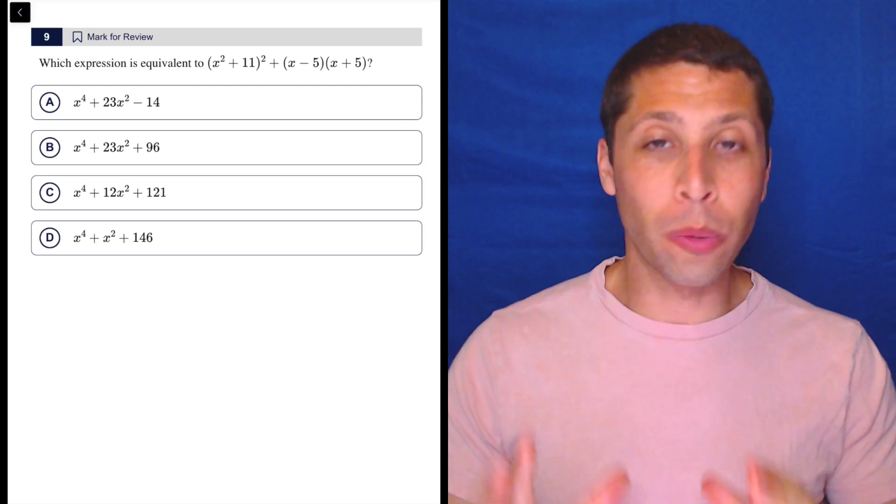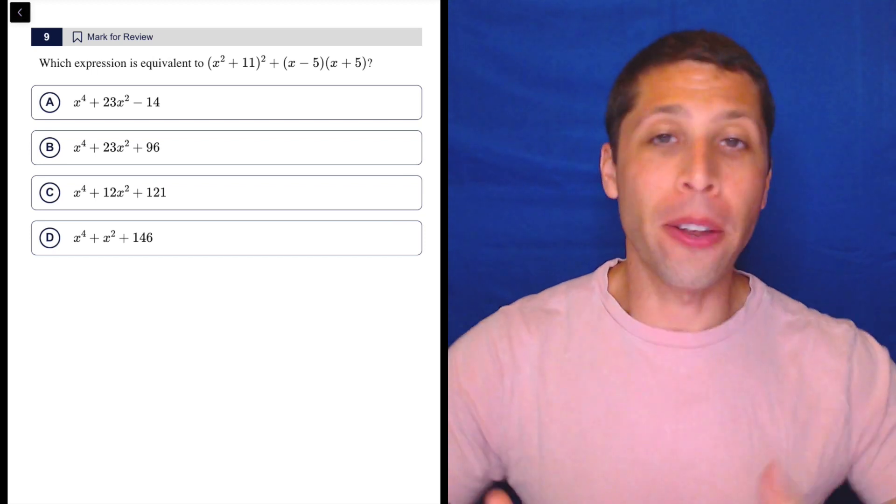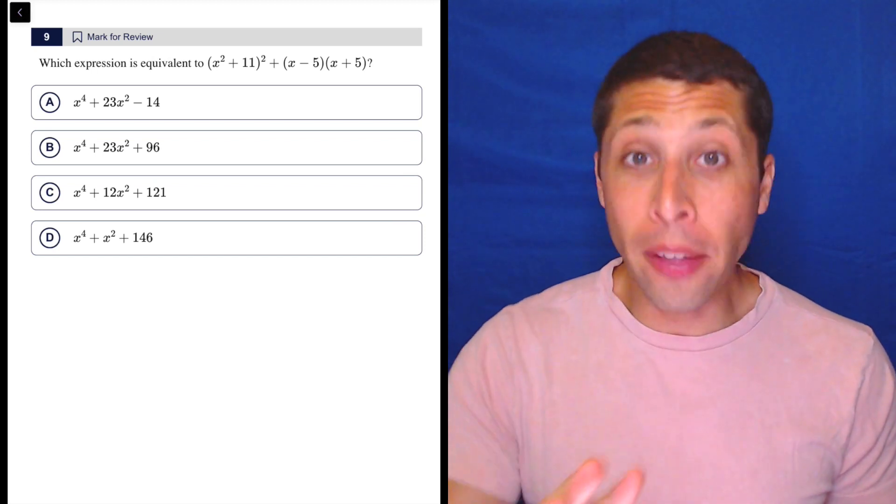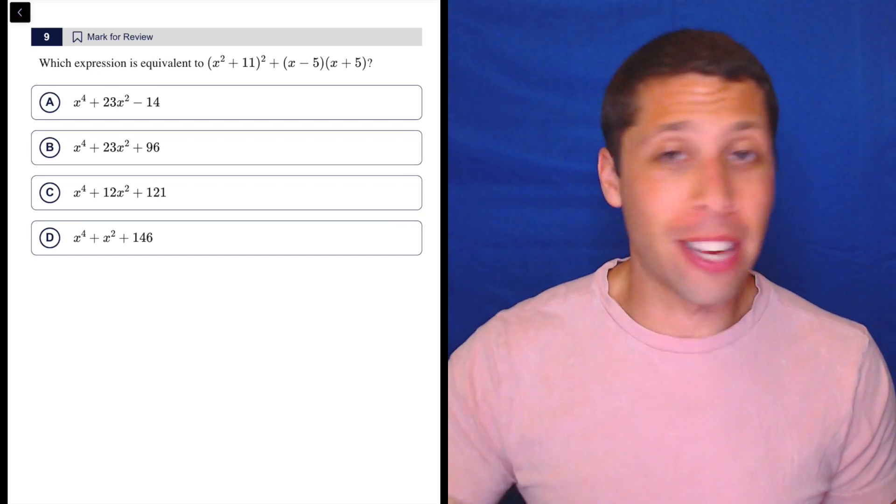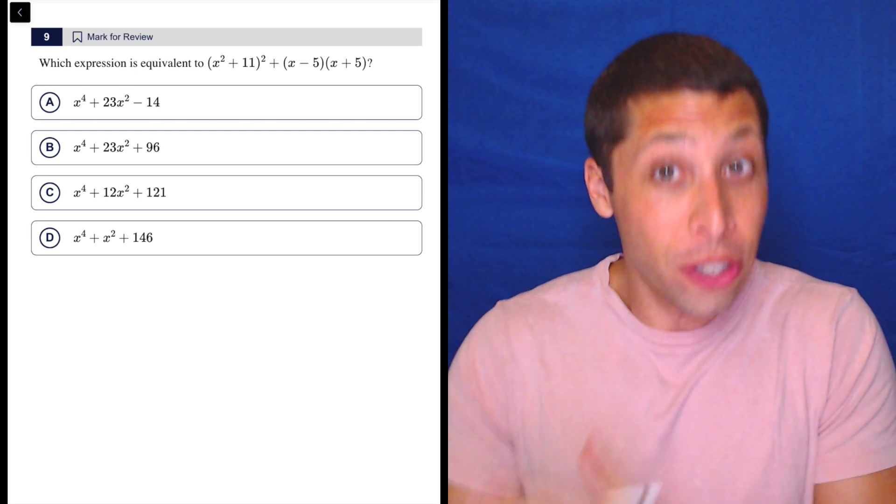This is a great example of a question where if you're thinking strategically about the SAT, your method for this is obvious. Most of you are not thinking strategically. You're just thinking about it as a math test. So you're going to look at this and be like, oh, it's algebra. I've got to foil, I've got to distribute, I've got to do all these things. And you can solve that way.